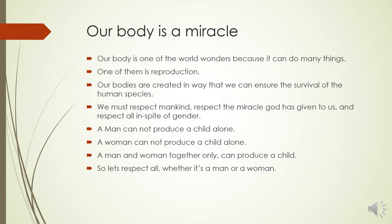I hope you got a good idea about fertilization, the menstrual cycle, and everything. After learning this lesson, what we can think of is that our body is a miracle — one of the world's wonders because it can do many things. Just imagine how many things we can do that animals cannot. One of the amazing things our body can do is reproduction. Our bodies are created in a way that we can ensure the survival of the human species, so we must respect mankind, respect the miracle that God has given to us, and respect all in spite of gender.